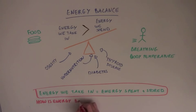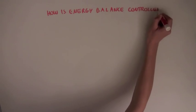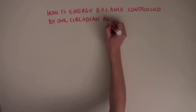So it's important to understand how energy balance is maintained, and what happens when energy balance becomes imbalanced. This article tries to understand how energy balance is controlled by our circadian rhythms, or internal clock.